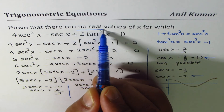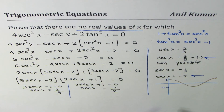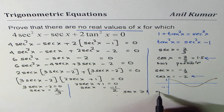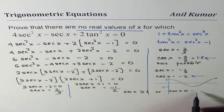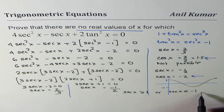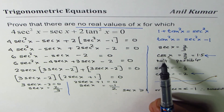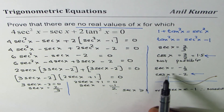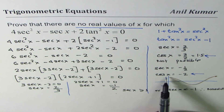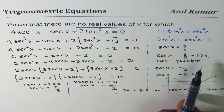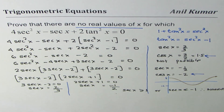So we can say that sec x is either greater than or equal to 1, or less than or equal to minus 1 — it cannot be between these two values. Therefore no solution. You could also write sec x as the reciprocal of cos x: sec x = minus 1/2 means cos x = minus 2, and since cos x must be between 1 and minus 1, this equation has no real solution.